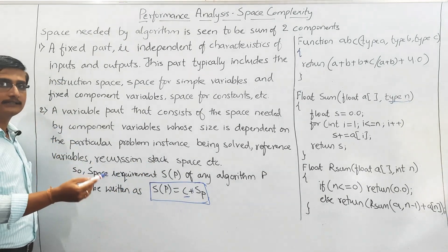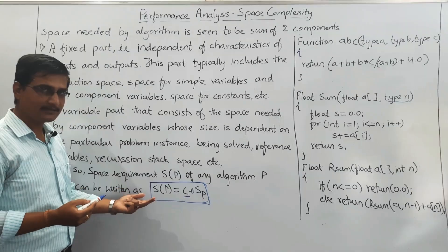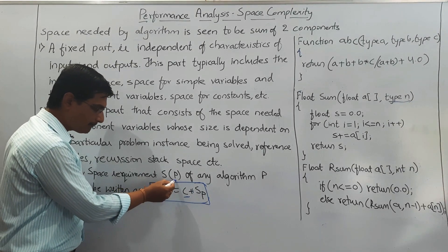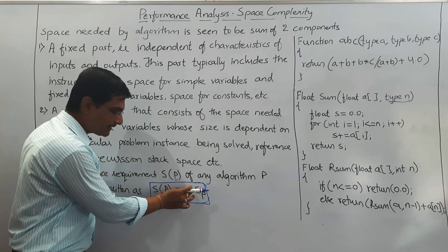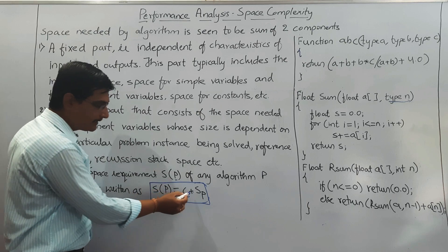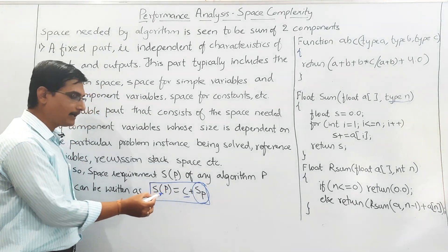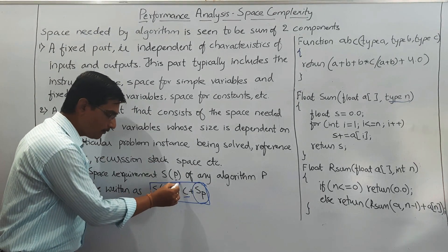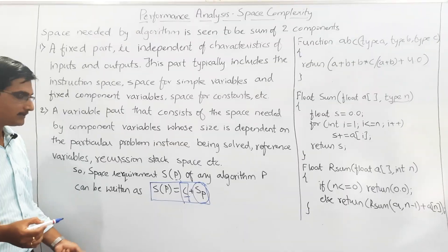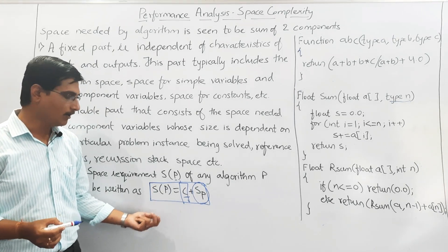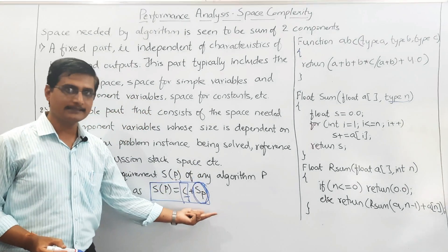The second part depends on all these things and it is the variable part. So the total space requirement of an algorithm S(P) for a particular algorithm P can be written as S(P) = C + SP, where SP is the variable part and C is the constant part. We are ignoring the fixed part since it is just instruction space or simple variable space. Whenever we talk about space complexity, we only concentrate on and calculate the variable part SP.